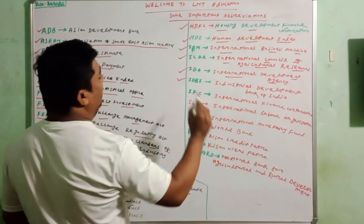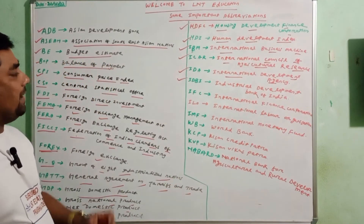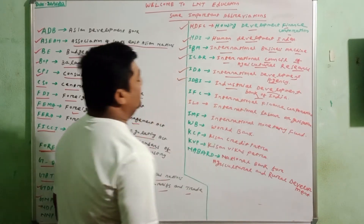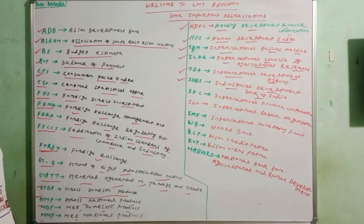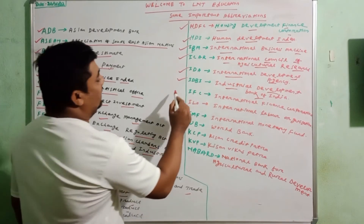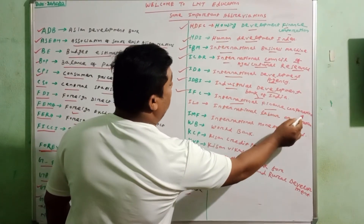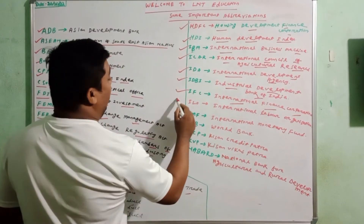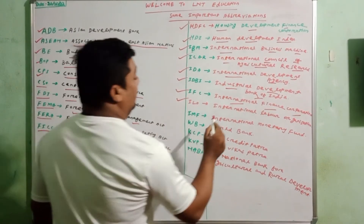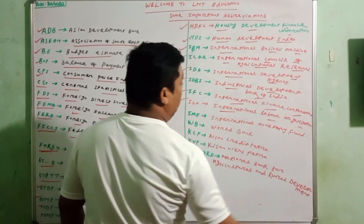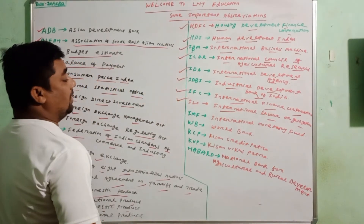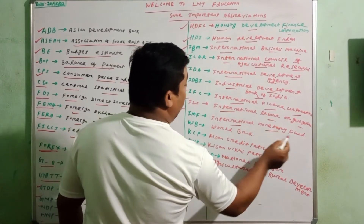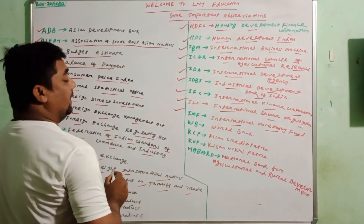IDBI means Industrial Development Bank of India. IFC means International Finance Corporation. ILO means International Labour Organization. IMF means International Monetary Fund. WB means World Bank.